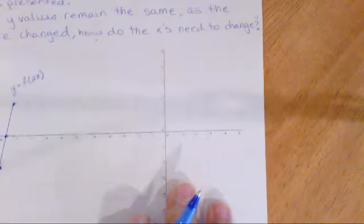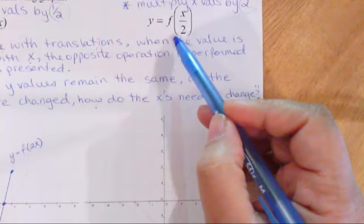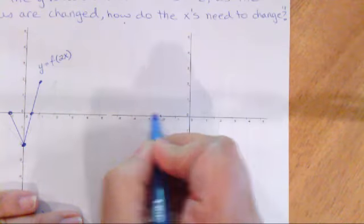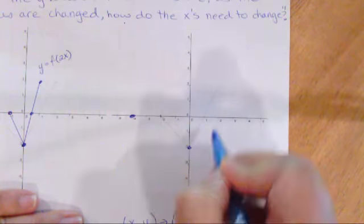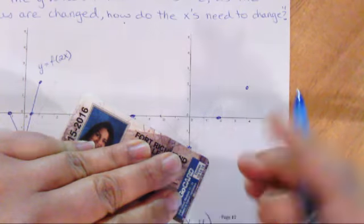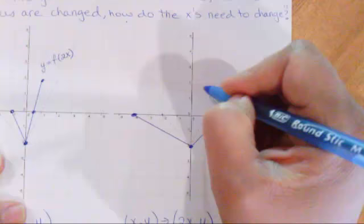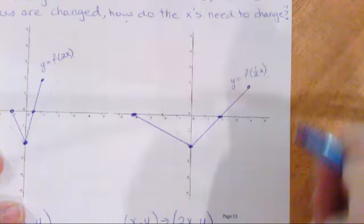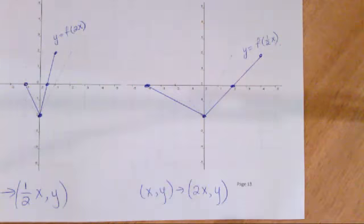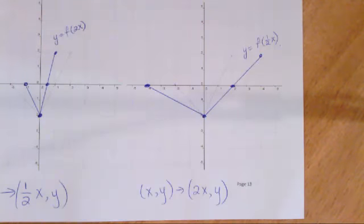For f of x over 2, we do the opposite operation and multiply all x values by 2. So negative 2 becomes negative 4, 0 stays the same, 1 becomes 2, and 2 becomes 4. This gives us the new graph: y equals f of one half x. Make sure you're practicing these questions. In the next video I'll do a bunch of examples — see you soon.